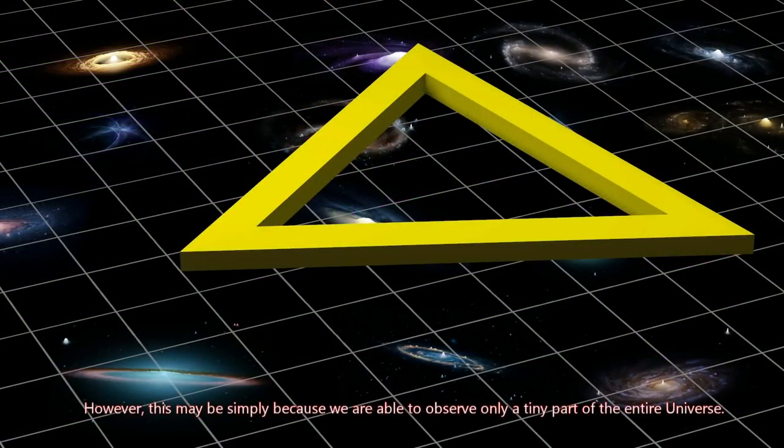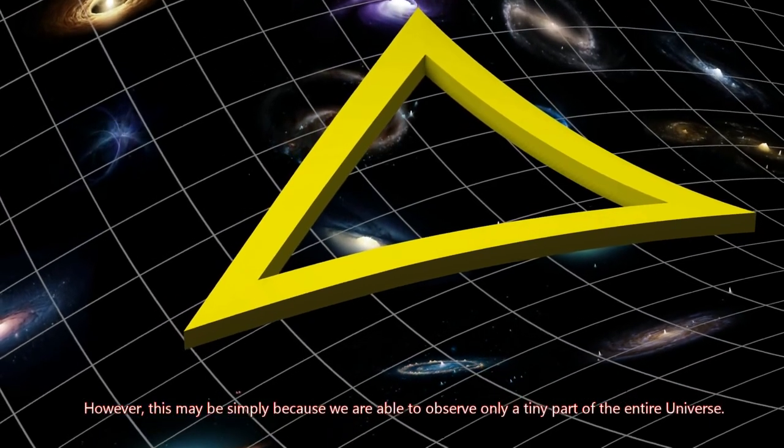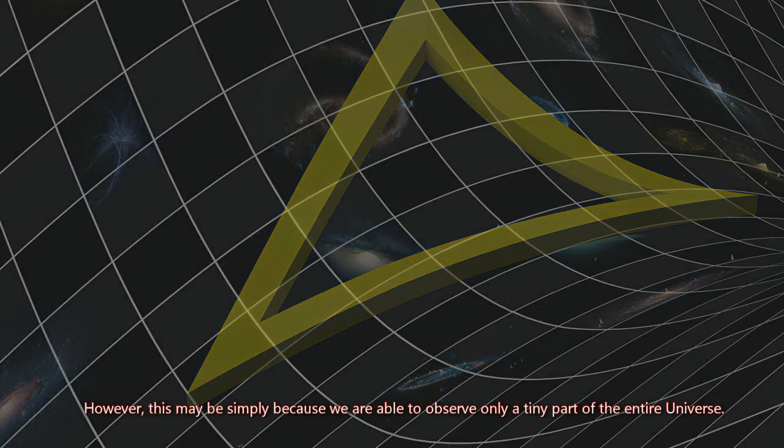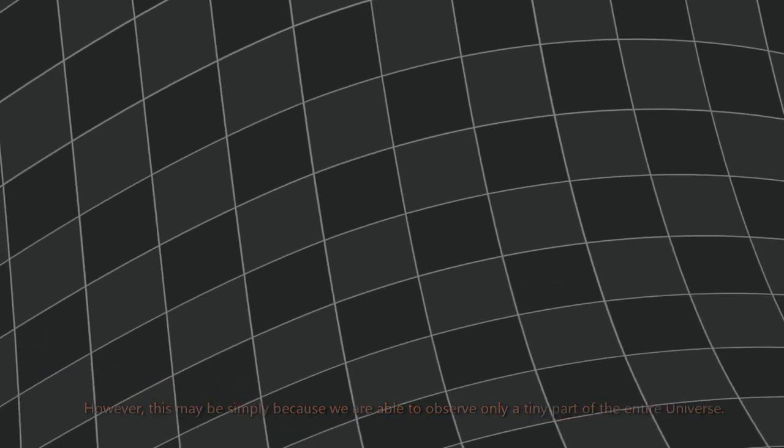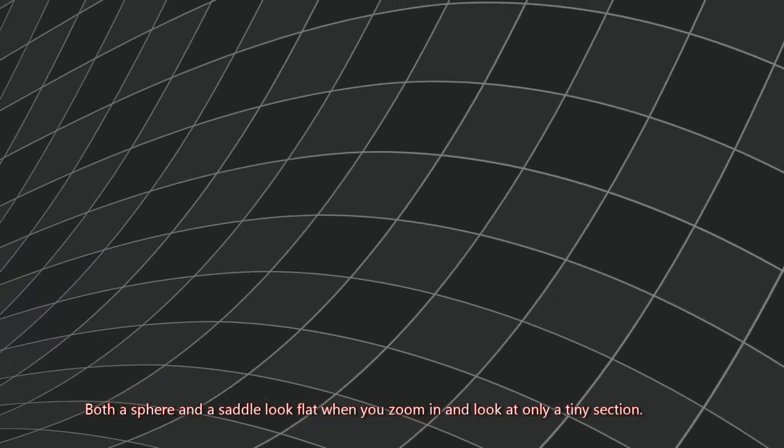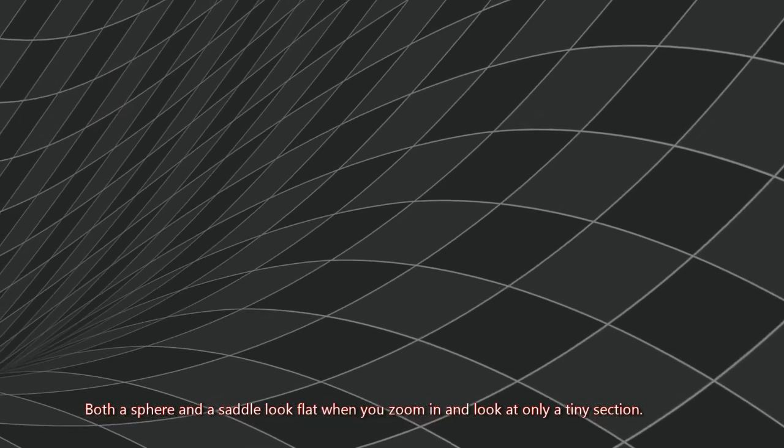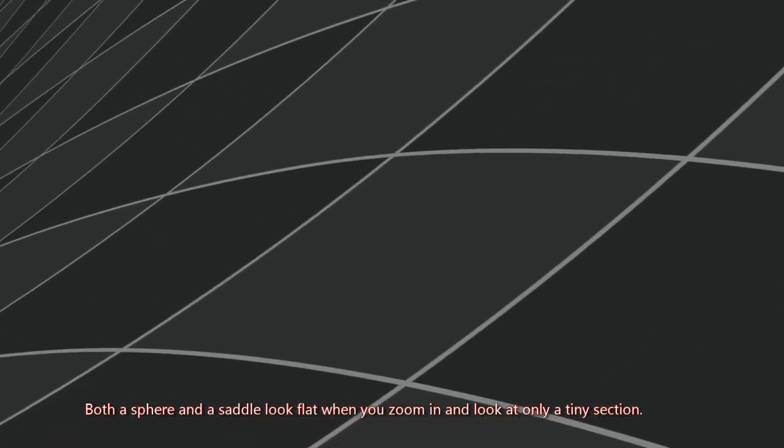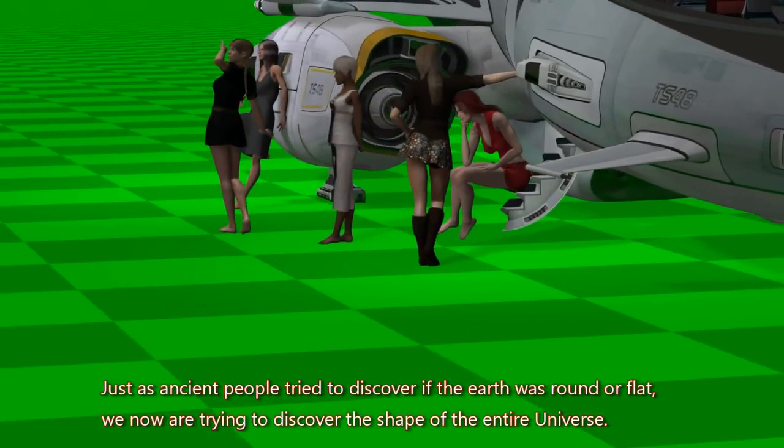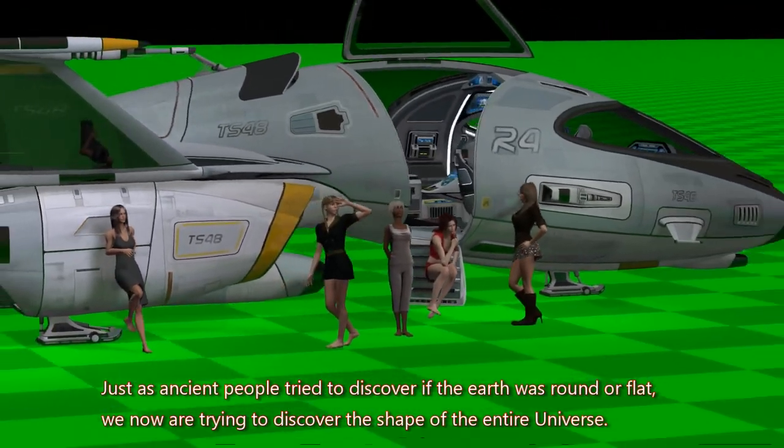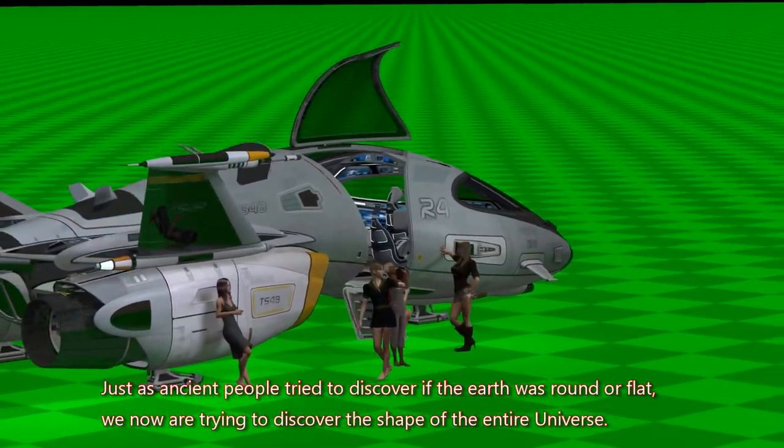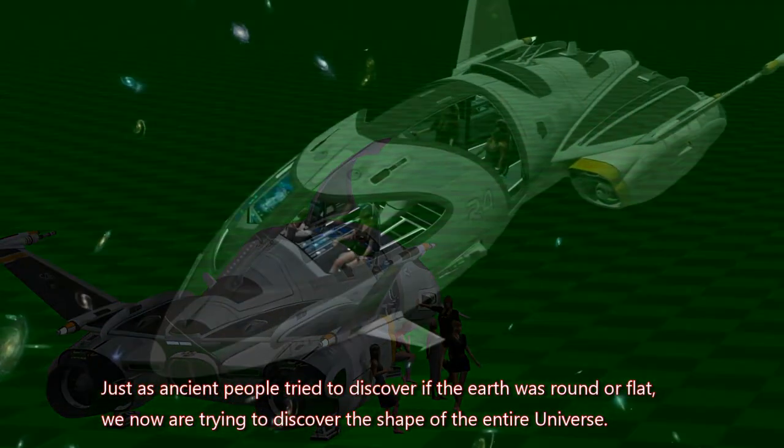However, this may be simply because we are able to observe only a tiny part of the entire universe. Both a sphere and a saddle look flat when you zoom in and look at only a tiny section. Just as ancient people tried to discover if the Earth was round or flat, we now are trying to discover the shape of the entire universe.